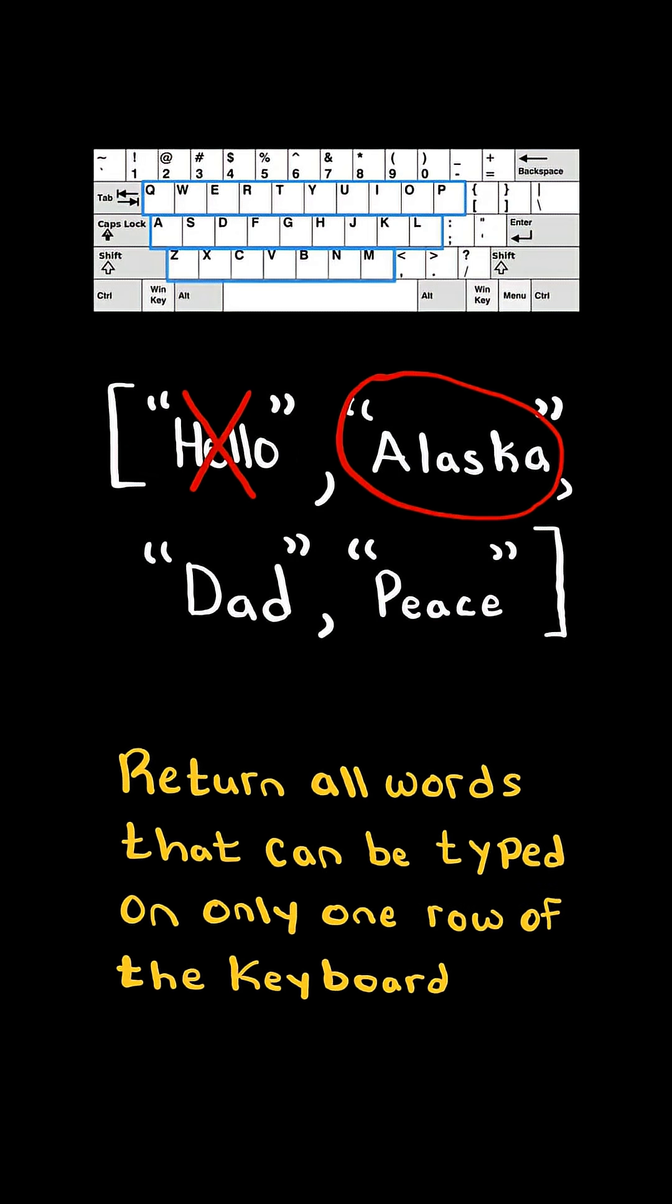Now let's consider the next word Alaska. Notice it can be typed with just one row of the keyboard, so we include it in the list. And we continue this process with the remaining words.